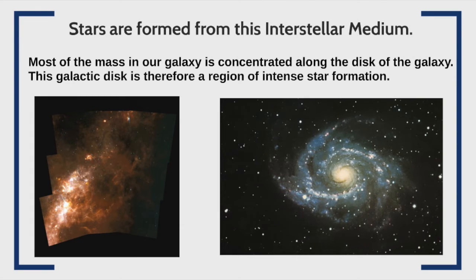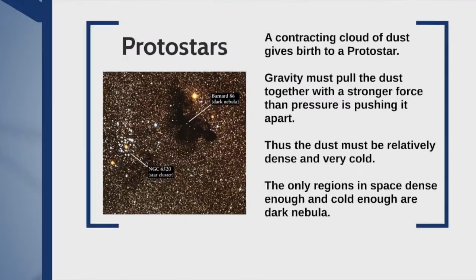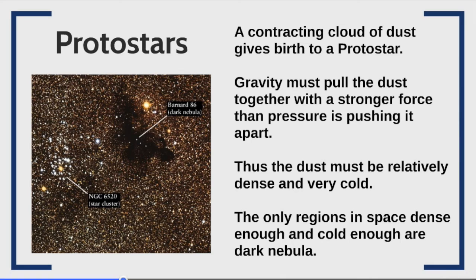Stars are formed within this interstellar medium. Since a lot of material must be compacted together in a small space without creating too much thermal pressure, they form in dark nebulae. Most of the gas is contained within the disk of a galaxy, so most stars being formed are within these galactic disks in dark nebulae. Gravity pulls all this material together and as it starts to condense it increases thermal energy — gravitational potential energy is being converted into thermal energy. Fortunately the dust molecules can absorb this thermal energy and radiate infrared photons which carry the energy out of the cloud, allowing the cloud to compress without creating too much thermal energy that would halt the gravitational collapse.